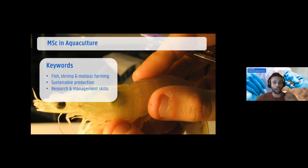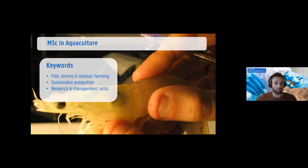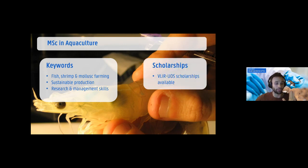The final master I'll talk about is Aquaculture — one of the fastest growing animal production sectors in the world and one of the few ways to meet global protein demand. This master looks at how to do aquaculture sustainably, covering both managing and producing aquaculture while keeping fish healthy and ensuring a high-quality end product.